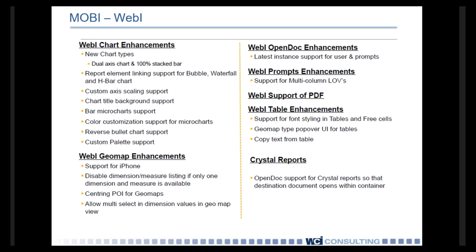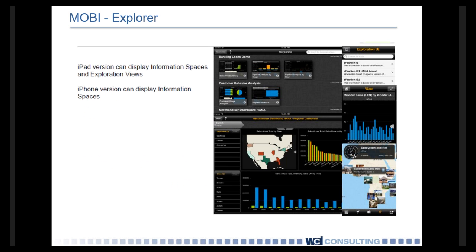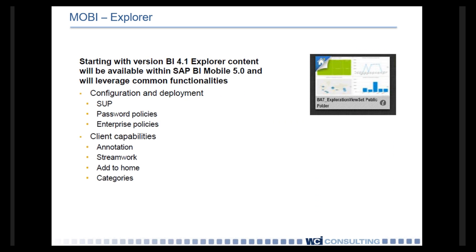Explorer is now finding a new home in 5.0. You'll now be able to see information spaces and exploration views on your iPad or Android tablet. The iPhone, however, is only going to be showing information spaces until the next updates. Also in Explorer, the 4.1 Explorer in BI Mobile is going to allow for you to use some of your enterprise and password profiles, as well as annotation and Teamwork integration that were originally not available for Explorer. They're now available in BI Mobile 5.0.